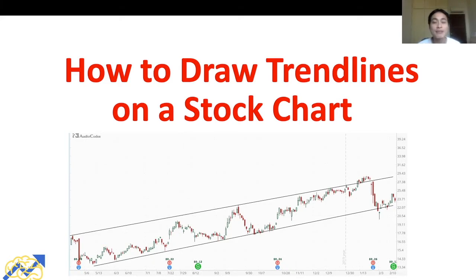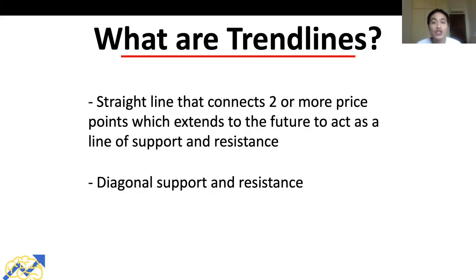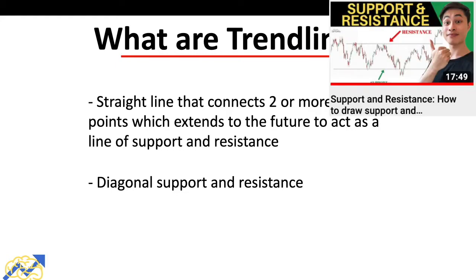What are trend lines? The definition of a trend line is a straight line that connects two or more price points, which extends into the future to act as a line of support and resistance. If you're not sure what support and resistance is, check out my other video where I explain what they are and how to identify and use them.